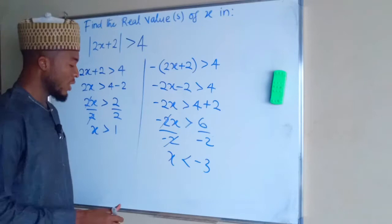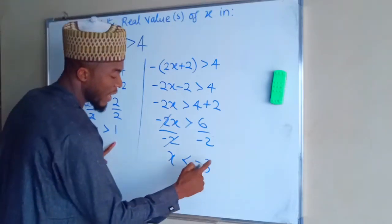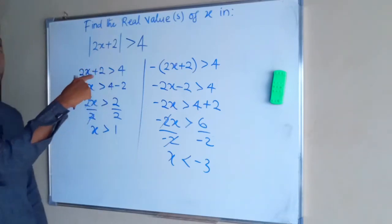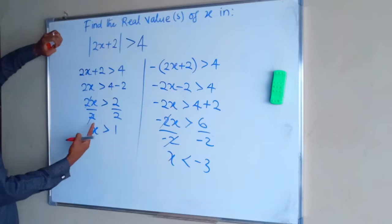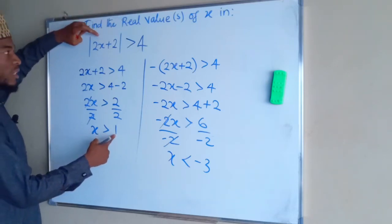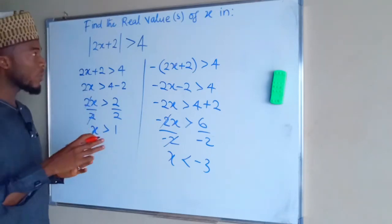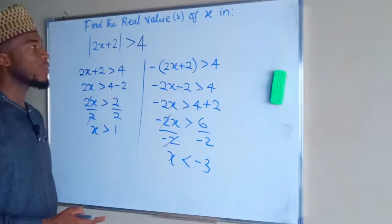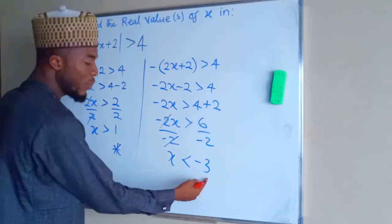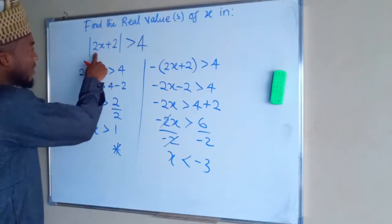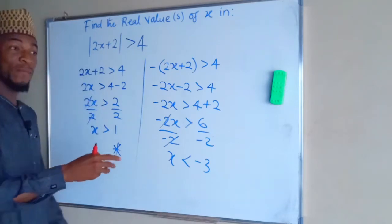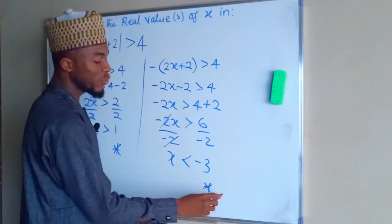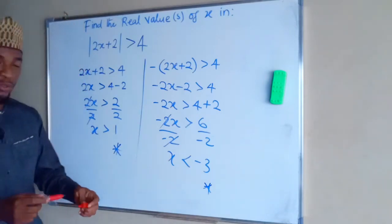We now have x greater than 1 and x less than negative 3. But we need to ask: are these the real values? We need to check. Testing x equals positive 1: 1 times 2 is 2, plus 2 is 4. The absolute value of 4 is 4. Is 4 greater than 4? No, it is equal to 4, so positive 1 is not a solution. Testing x equals negative 3: negative 3 times 2 is negative 6, plus 2 is negative 4. The absolute value is positive 4, which is never greater than 4. So negative 3 is also not part of the solution.